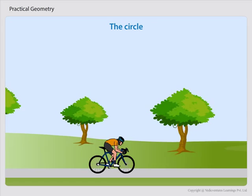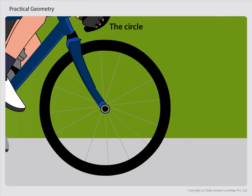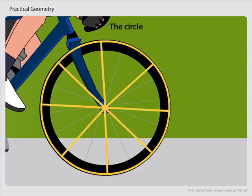The circle. Let us consider a wheel. Here every point on its boundary is at an equal distance from its center.